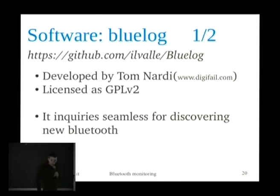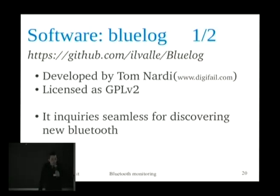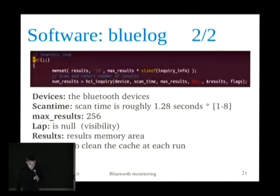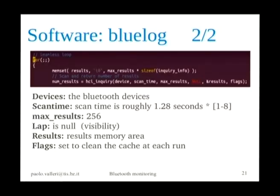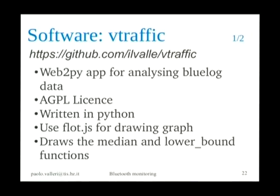Bluelog was initially developed by Tom Nardi. It discovers new devices, and each time it finds one it logs the current timestamp and the MAC address of the Bluetooth device to a log file. As you can see, the core of the code can be summarized in one line: hci inquire, which comes from the Bluetooth library and makes the real query to other devices. The rest of the code just logs the MAC address found and sets up the Bluetooth output.